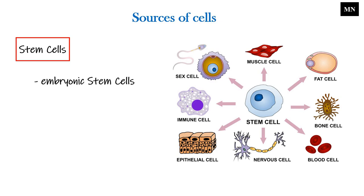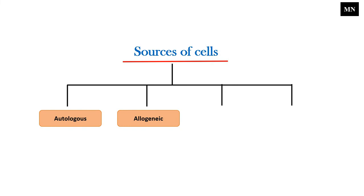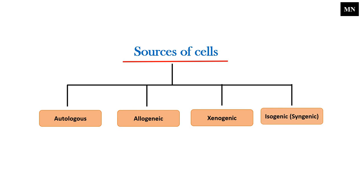Now we will discuss the sources of cells for tissue engineering. Mainly stem cells, such as embryonic stem cells and adult stem cells, serve as the primary instrument of tissue engineering. The sources of cells are classified into four categories based on their origins: Autologous cells, which come from the person that needs the new cells; Allogenic cells, which come from a body of the same species; Xenogenic cells, which come from a different species; and Isogenic or Syngenic cells, which come from identical twins.